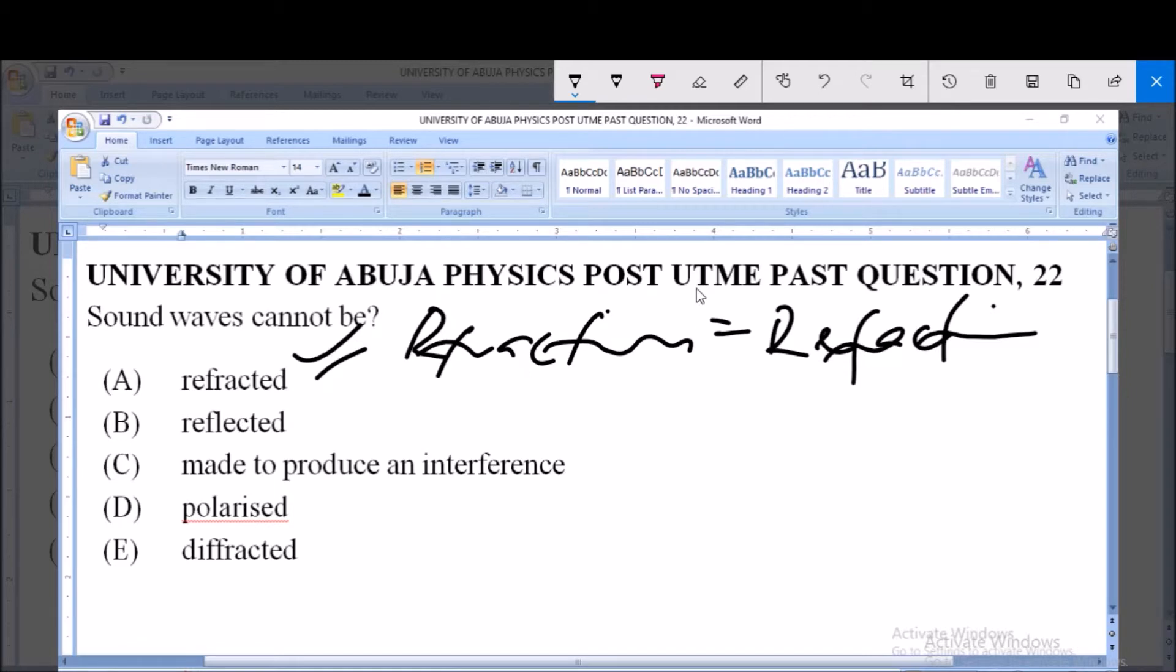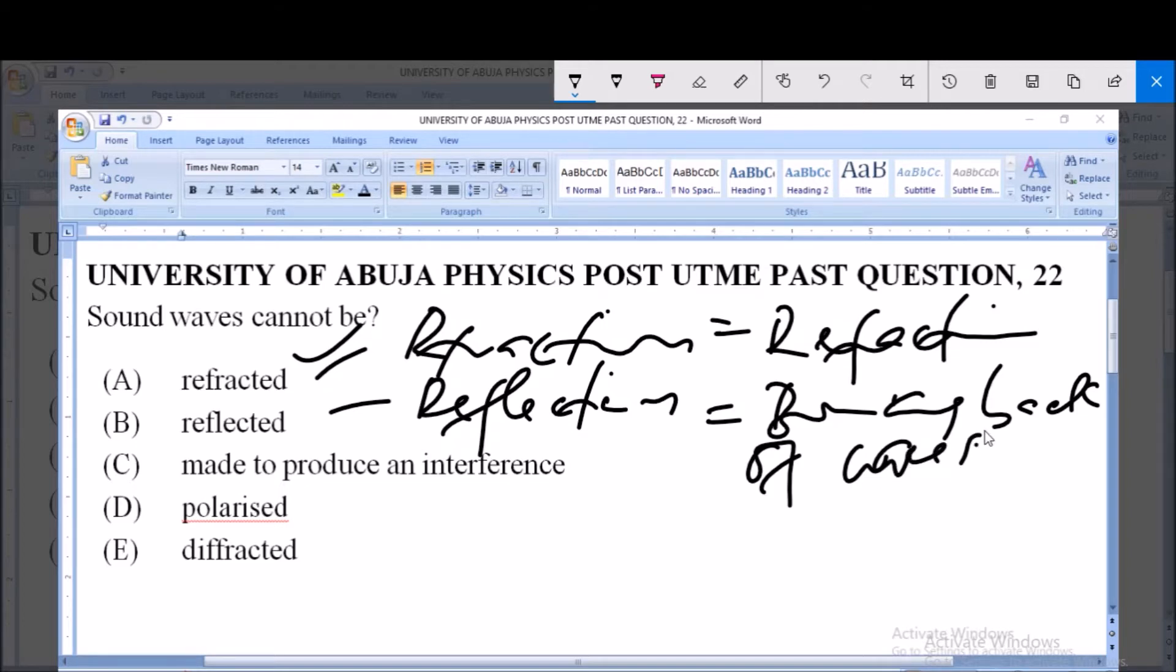Now we have reflection. Reflection is simply the bouncing back of waves. You notice that when you are in an enclosed room, a very big hall that is empty and you shout, you begin to hear echoes of your voice like a replay of what you said. This replay or echo is due to the reflection of sound. So sound waves can actually be reflected.